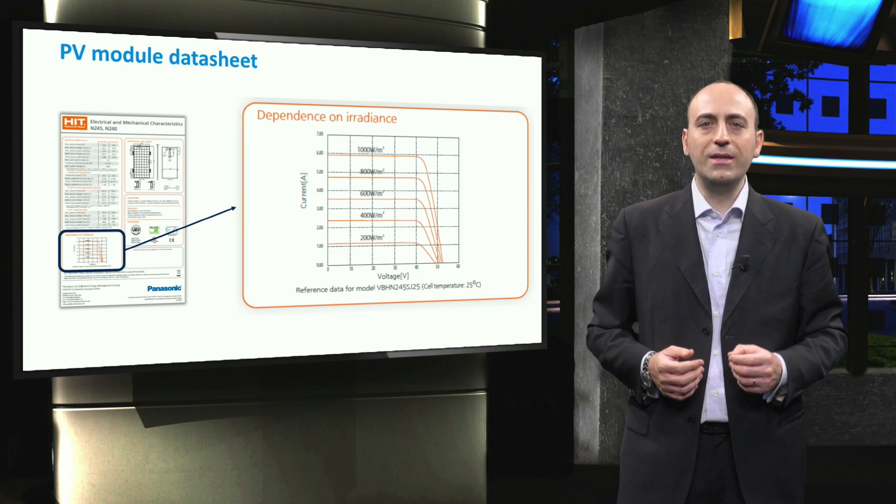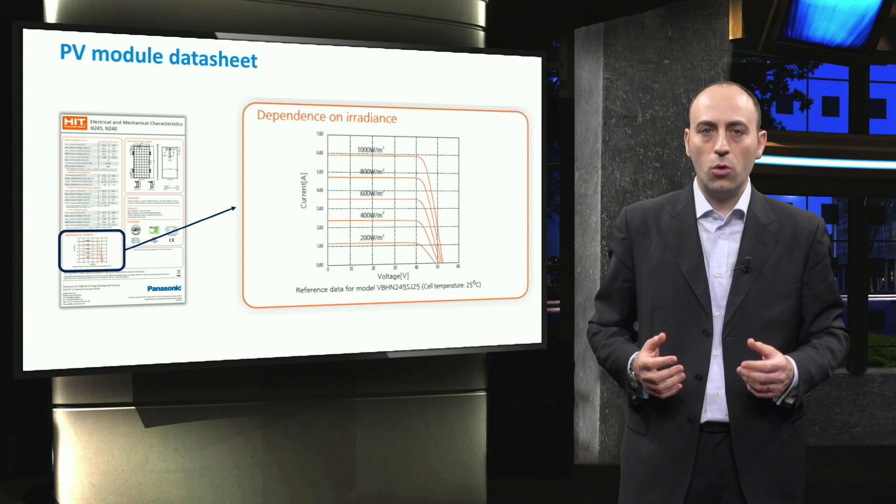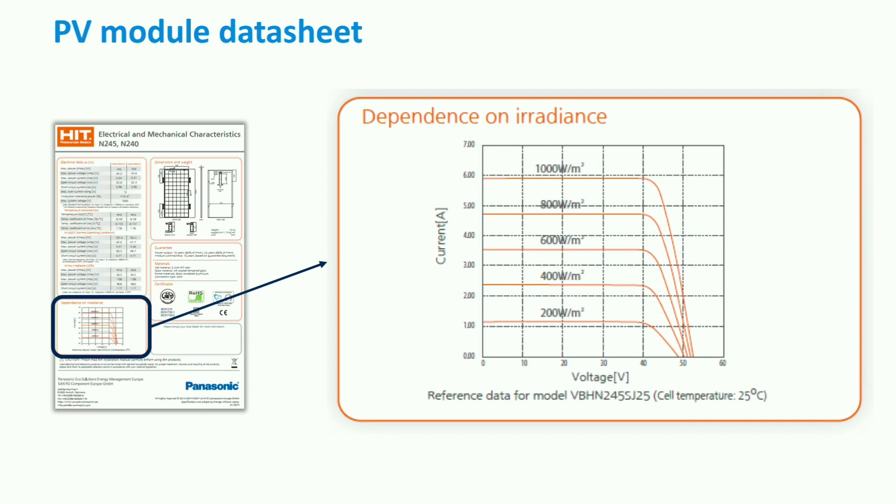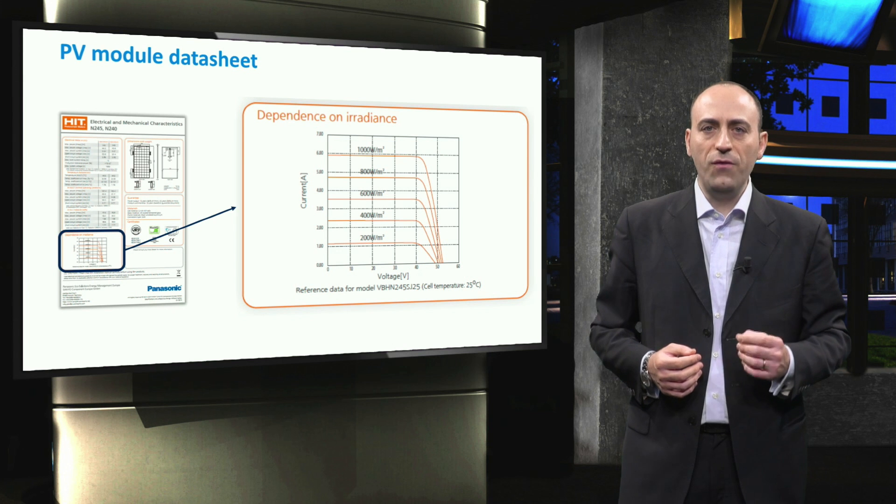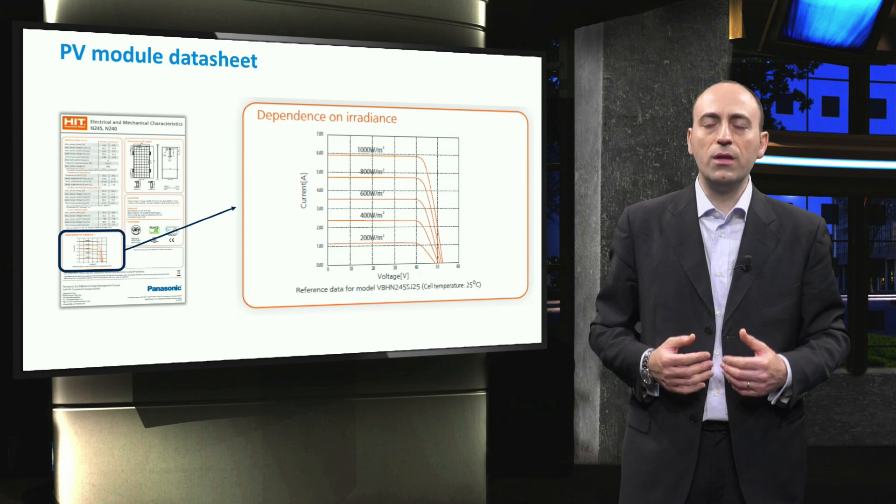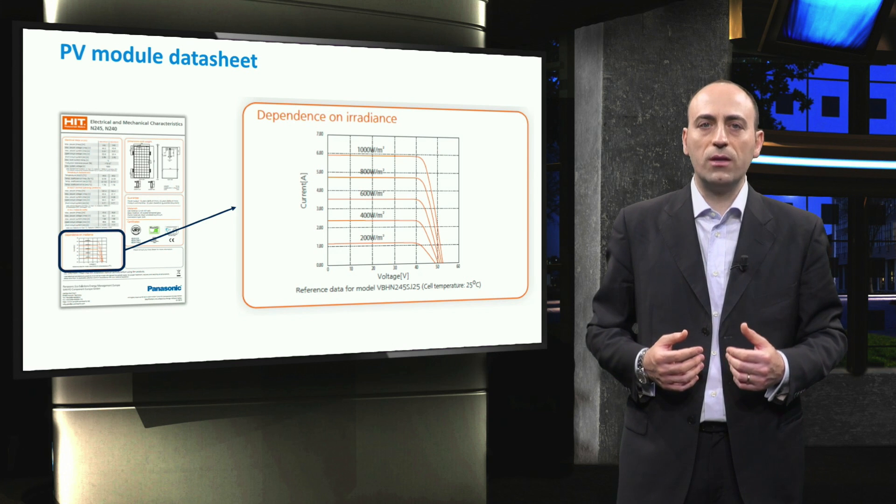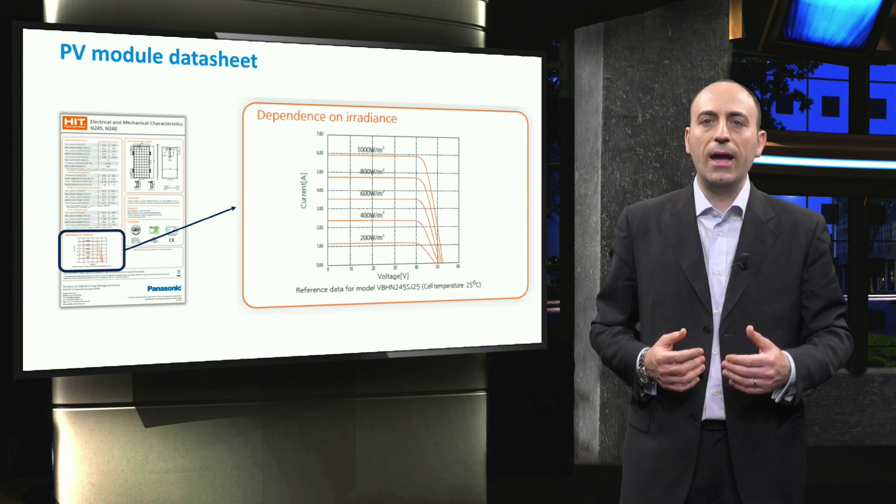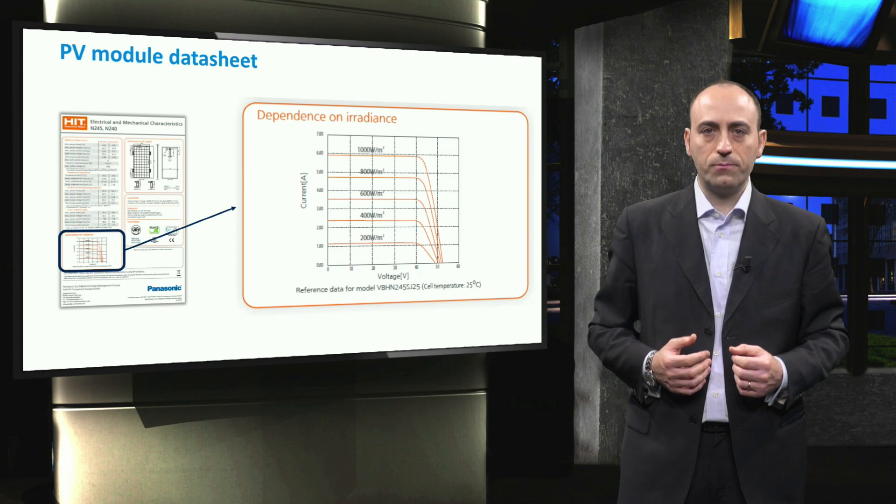Another important module parameter is the irradiance dependence of the module. These are the voltage-current characteristics under different irradiance conditions and at constant module temperature of 25 degrees Celsius. Generally, a single light source is used to simulate the different irradiance levels. The irradiance level is reduced through the use of filters. At a fixed temperature, the current increases with increasing irradiance, starting from more than 1A at 200 Watt per square meter to a value of 5 times higher at 1000 Watt per square meter.